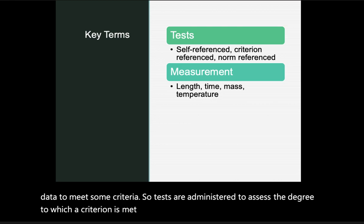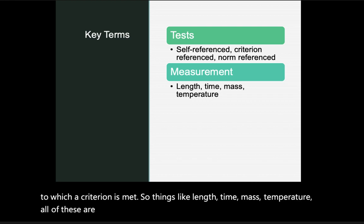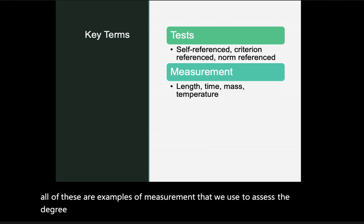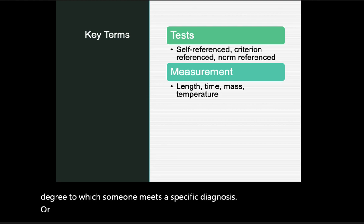Examples of measurement criteria include things like length, time, mass, and temperature. All of these are examples of measurement used to assess the degree to which someone meets a specific diagnosis or outcome, with each category serving as a criterion toward that final understanding.